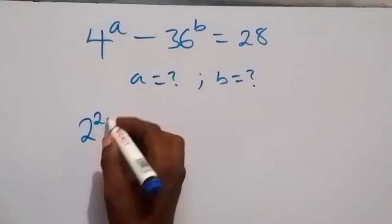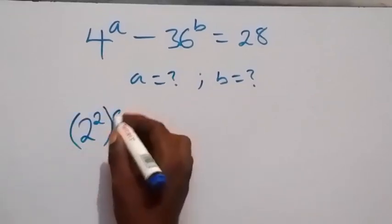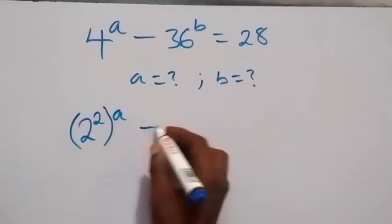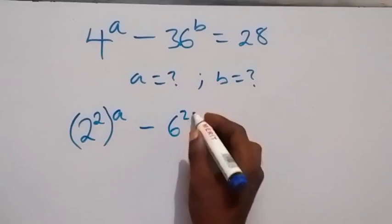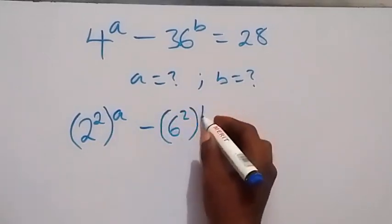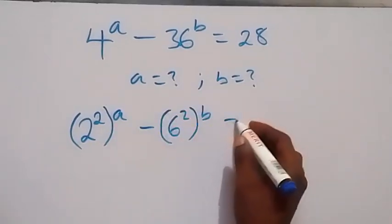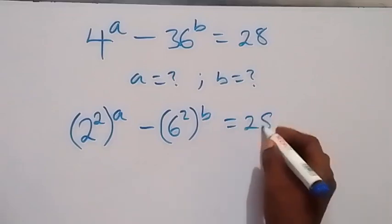...2 squared, then raised to the power a, minus 6 squared raised to the power b, equals 28.